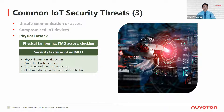Thirdly, it's a physical attack. Physical tampering like JTAG interface access, clock and voltage pin glitches. Security features of an MCU will cover physical tampering detection, protecting the flash memory inside of an MCU, TrustZone isolation to limit access, clock pin monitoring, and voltage pin glitch detection.